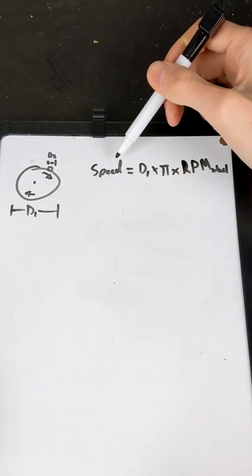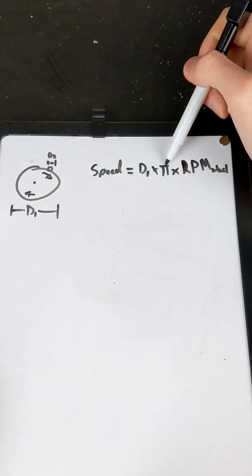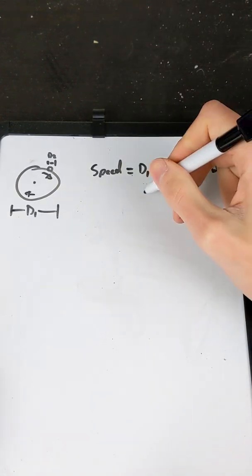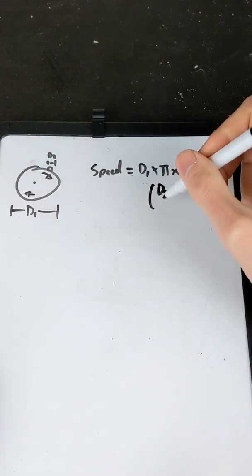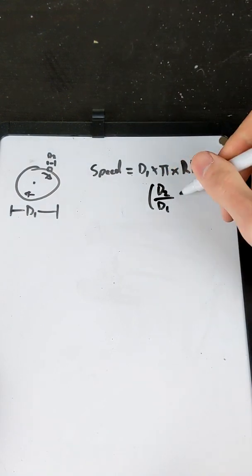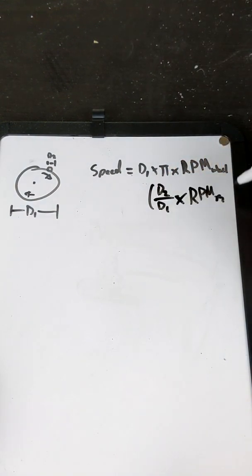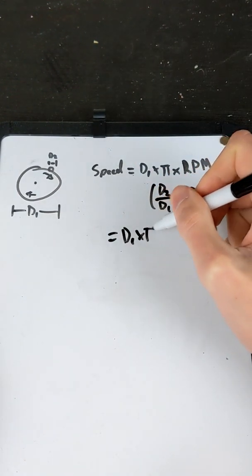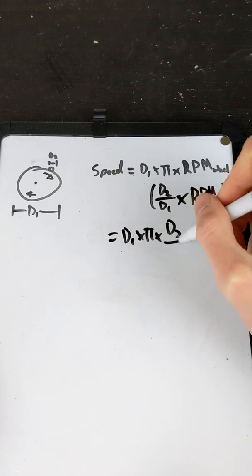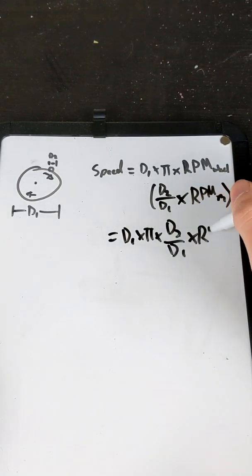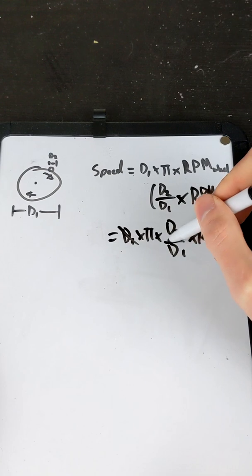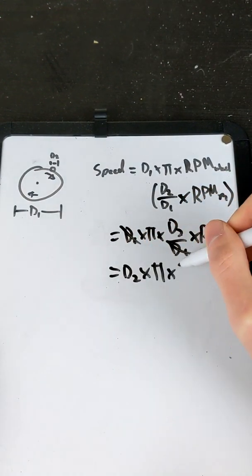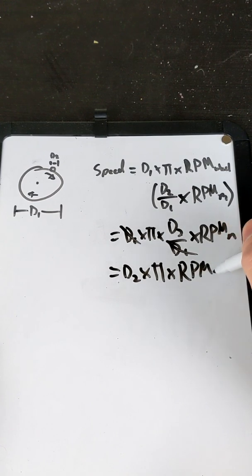So let's take a look at some math. The speed of the motor equals its diameter times by pi to get the circumference, times by its RPM. But its RPM is d2 — the diameter of the motor — over d1, the diameter itself, times by the RPM of the motor. So if we add all of this together, what we get is d1 times by pi times by d2 over d1 times by RPM of the motor, and that cancels out. So we end up with d2 times by pi times by RPM of the motor.